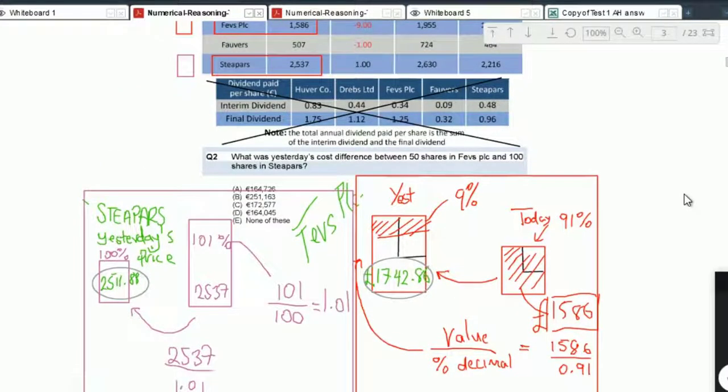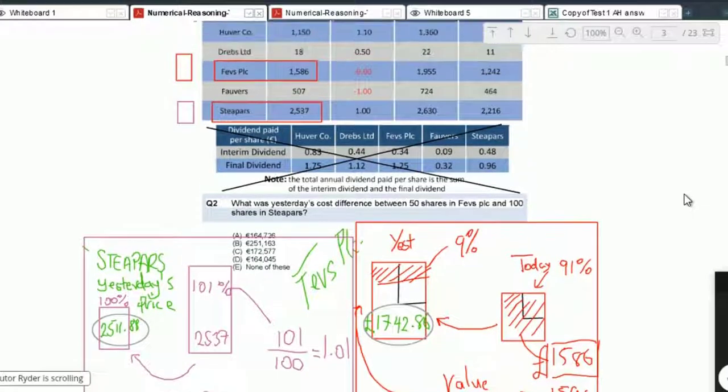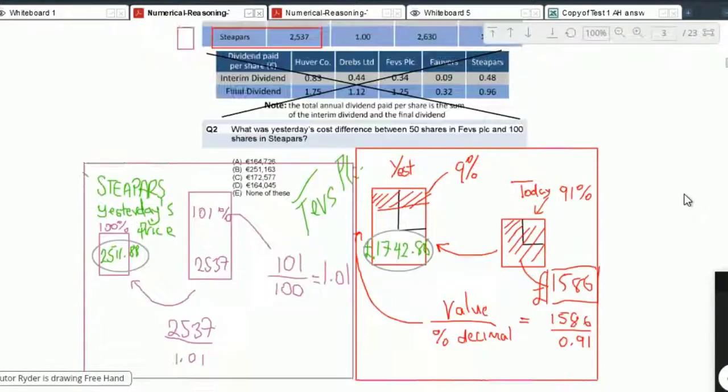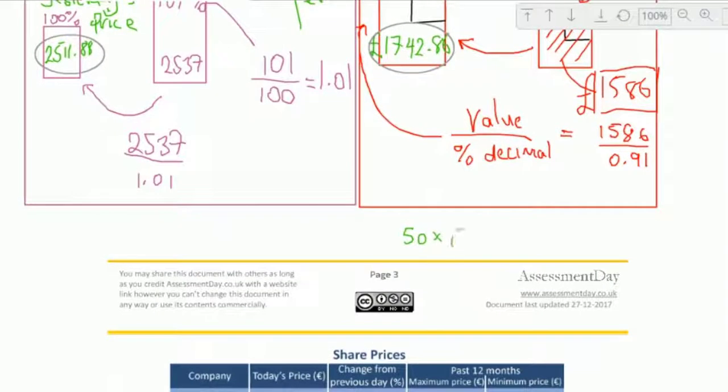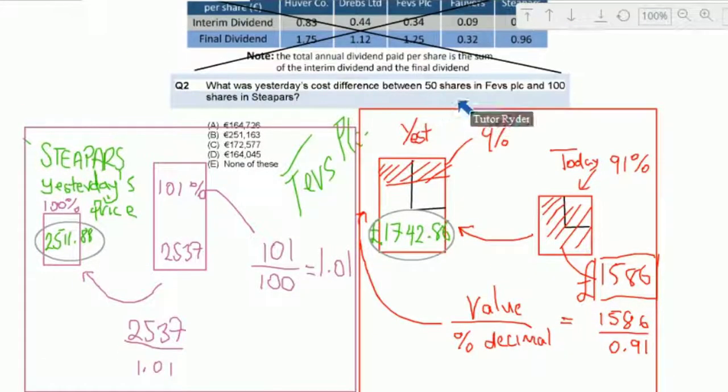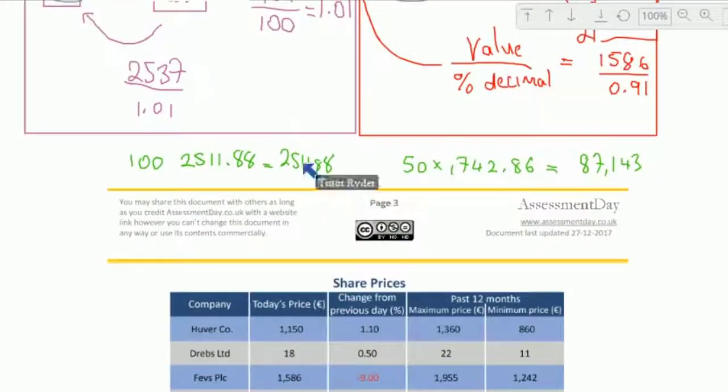All you've got to do now is we just take Feb's and we want 50 shares. So you're just going to do 50 times 1,742.86, 50 of those. And we want 100 steepers. Well, that's going to be easier because we just moved the decimal point two places. And then this one here, if we do 50 of them is going to become 87,143. And all we got to do then, because they said work out the difference between 50 of those shares and 100 of those shares is just subtract 87,000 from 251,000.